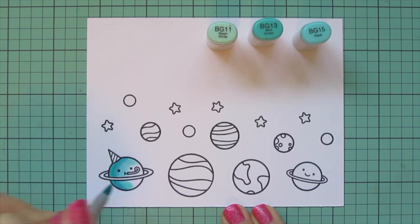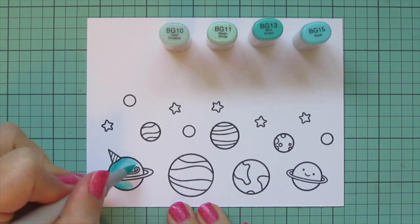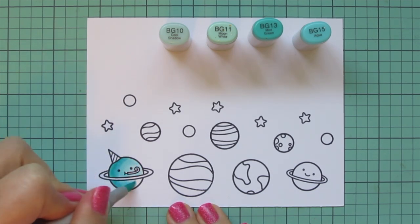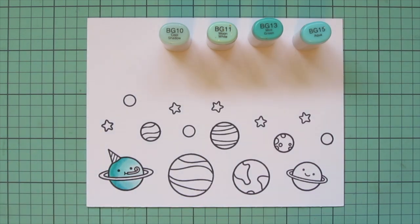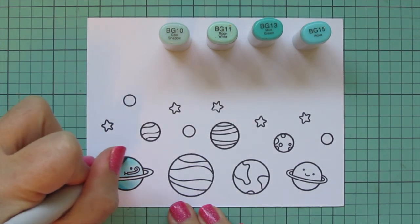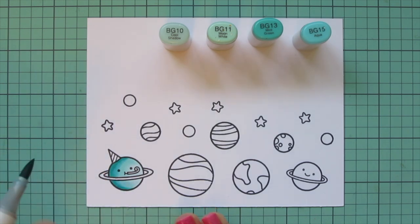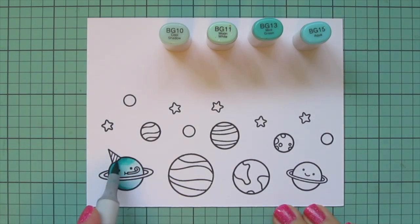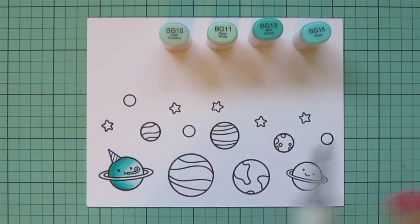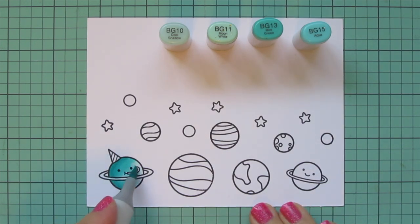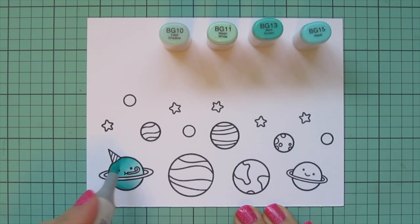I decided that I needed a fourth shade in there though because I wanted his right side to be even lighter. So I did pull in the BG10, and then I am going to do a second layer over that to smooth everything out. I felt like the blend wasn't as seamless as it could have been, and it also just increases that saturation and depth. So I'm just going right over the shades that I've already laid in, just doing a quick second layer.